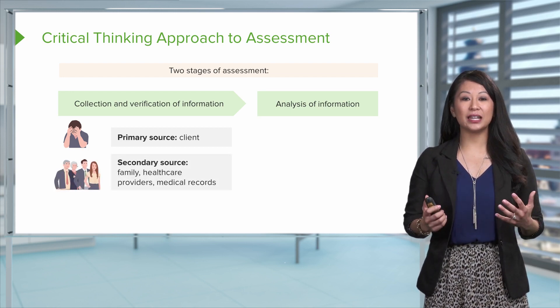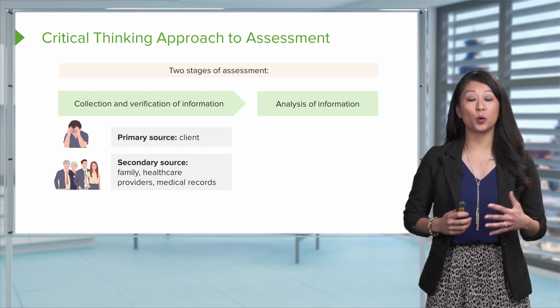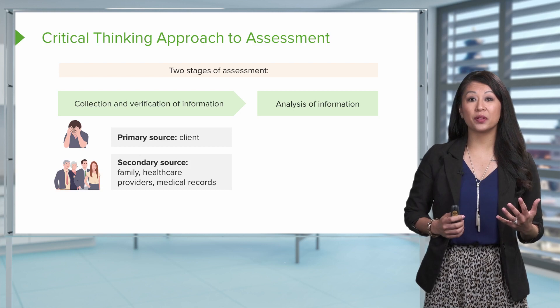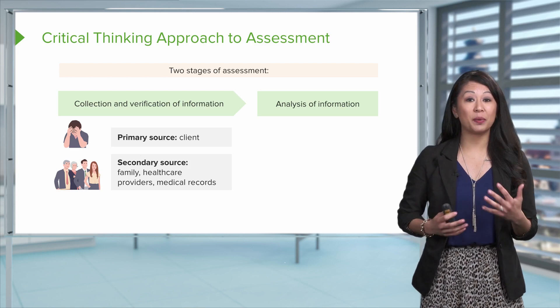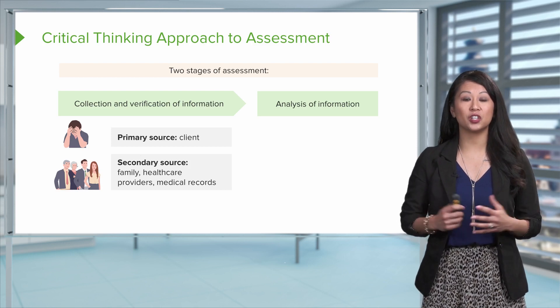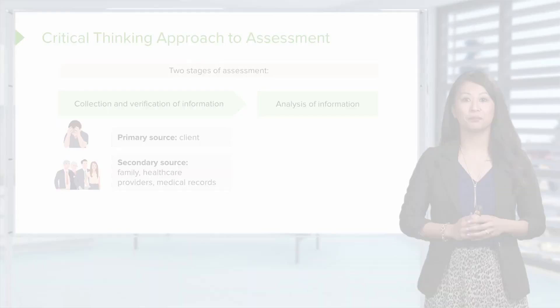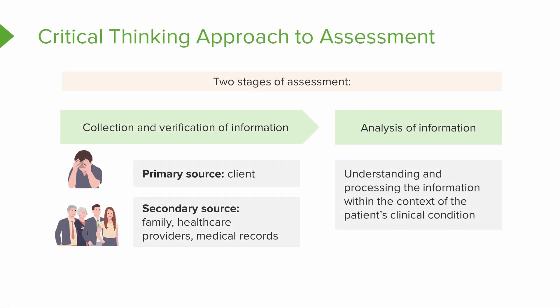Our secondary sources — which are our backup or supporting sources — include family members who may know the patient well or live with the patient, the healthcare providers, and the medical record information. Once we gather all those primary and secondary sources of information, we have to use our critical thinking skills to interpret that info and see how it applies to our patient's condition.